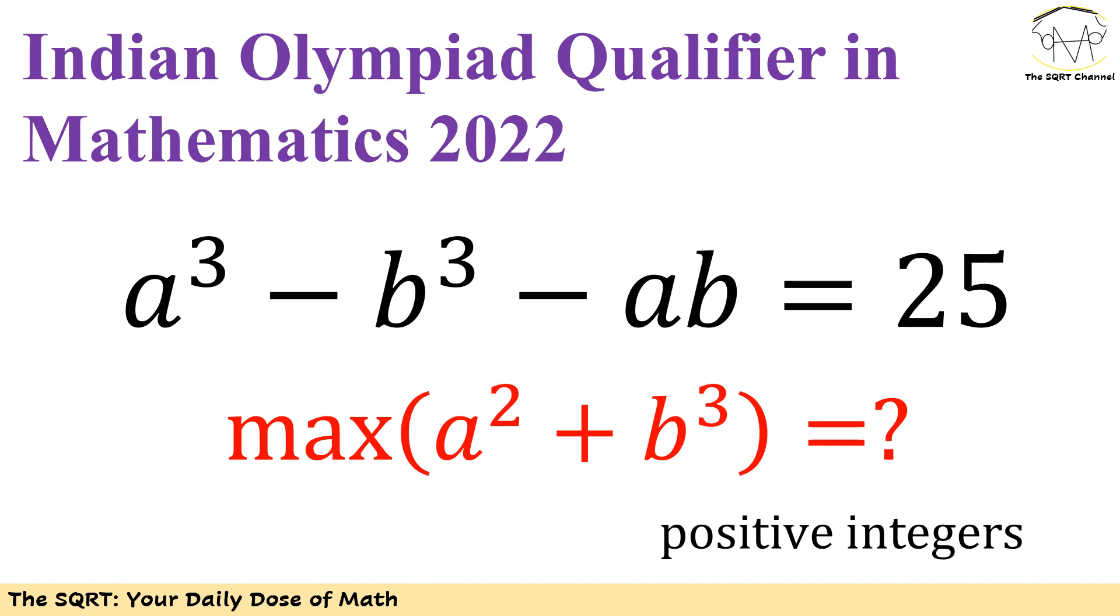In this problem we have a³ minus b³ minus ab equals 25 and we want to find the maximum value of a² plus b³. Remember a and b are positive integers. Let's see how we are going to solve this now.